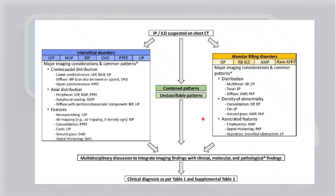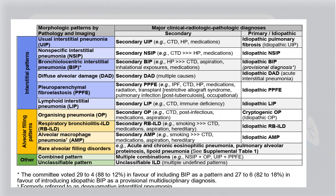Combining all these radiological, clinical, molecular, and pathological findings, a multidisciplinary decision is taken and then you arrive at a clinical diagnosis. This figure basically tells you the morphological pattern of interstitial and alveolar filling disorders and their associated clinical, radiological, and pathological diagnosis. Secondary etiologies are listed before the primary or idiopathic etiology, and the main aim is to ensure that the underlying cause exclusion is done before concluding a diagnosis of primary or idiopathic.